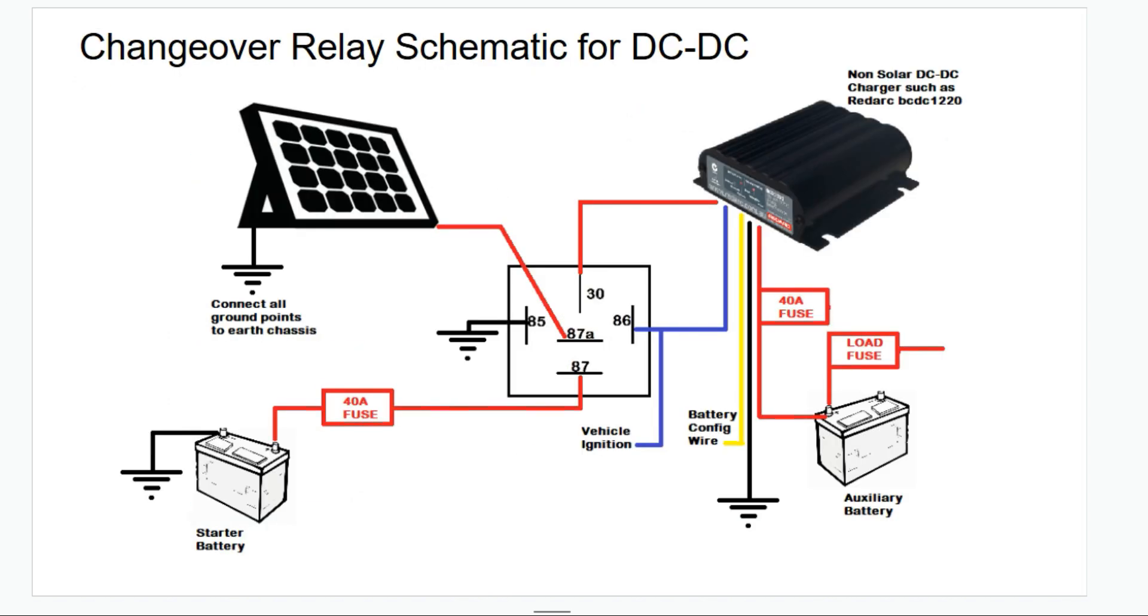This is a schematic if you're running a DC to DC system. So the power when the car's running comes in through pin 87. The relay can sense that the vehicle ignition is on so it will use pin 87 as the input and it will output that power to pin 30 which will run into your DC to DC charger and charge your second battery.